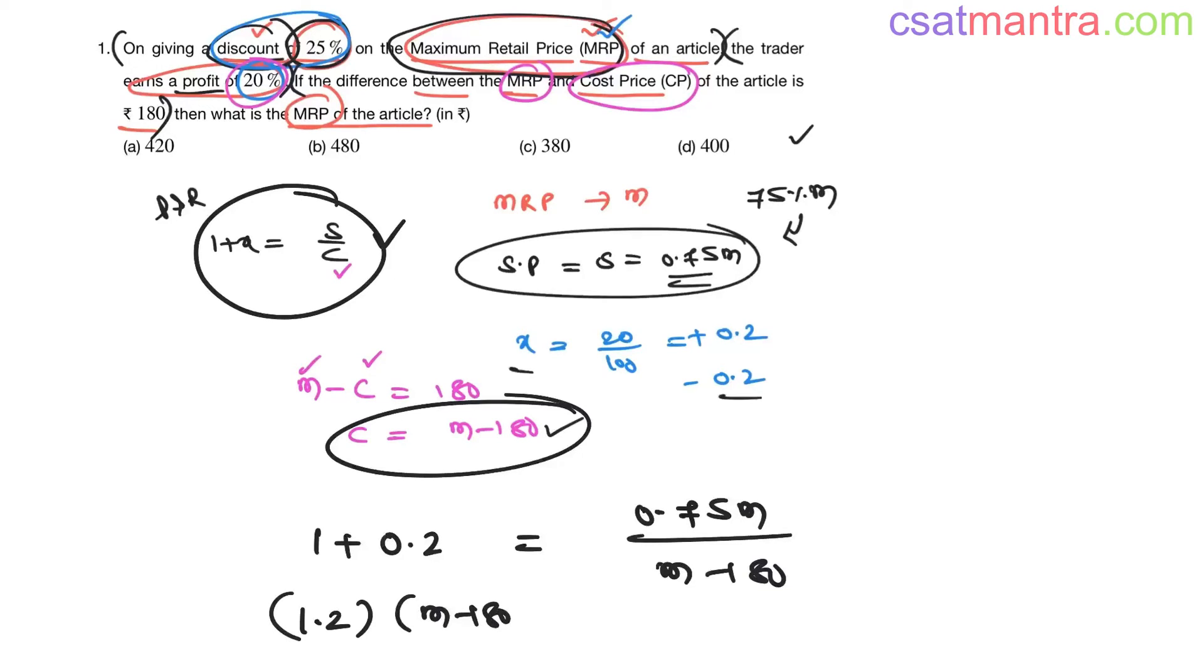Now bringing M terms to one side: 1.2m minus 0.75m, that is equal to 180 into 1.2. The difference between 120 and 75 is 45, so 0.45m is equal to 18 into 12.